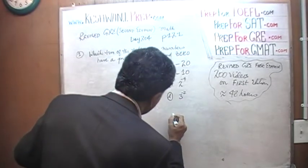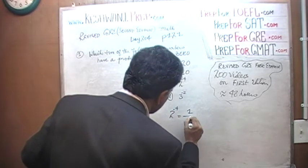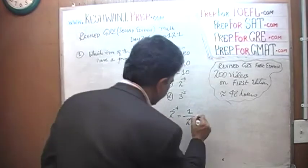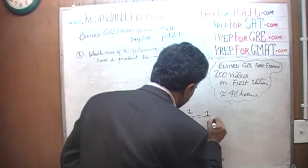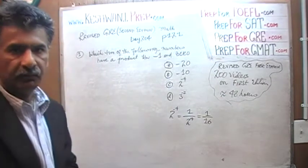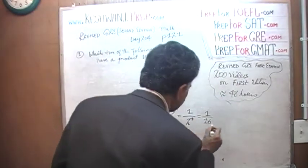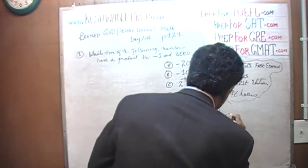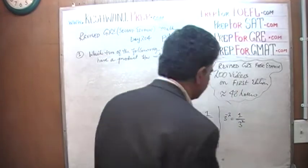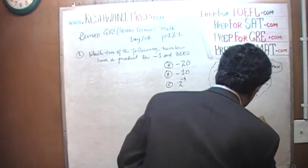2 raised to negative 4 is the same as 1 over 2 raised to positive 4, which of course is 1 over 16, because 2 times 2 is 4, 4 times 2 is 8, and 8 times 2 is 16. Similarly, 3 raised to negative 2 is the same as 1 over 3 raised to 2, which is 1 over 9. We have to keep that in mind.